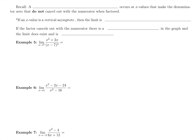A vertical asymptote occurs at x values that make the denominator 0 and do not cancel out with the numerator when factored. What did not factor and cancel is a vertical asymptote. Vertical asymptotes make you divide by 0 — there is no factoring and canceling that could get rid of a vertical asymptote. These are just called a VA.